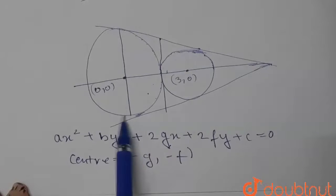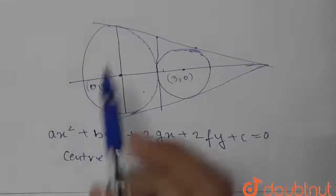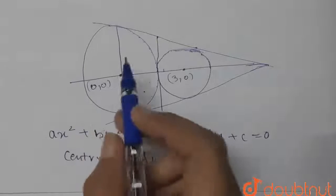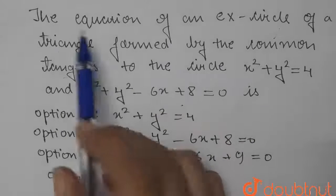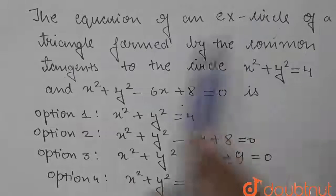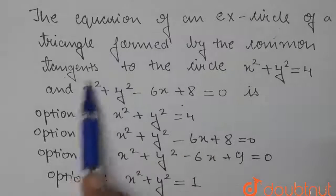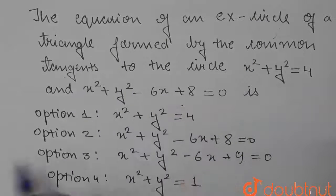Of the triangle which is formed by the common tangent. So equation of this larger circle was x² + y² = 4. Therefore it is the ex-circle, and we need to find the equation of the ex-circle of the triangle formed by the common tangents. That means this is the equation, so option number 1 is the correct answer.